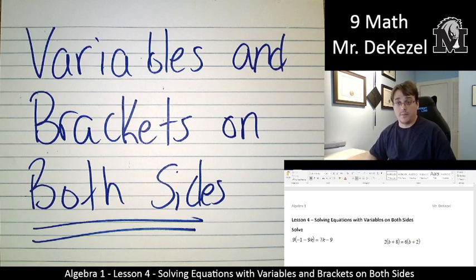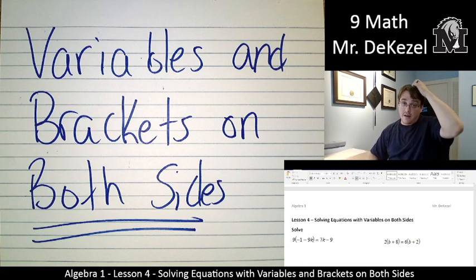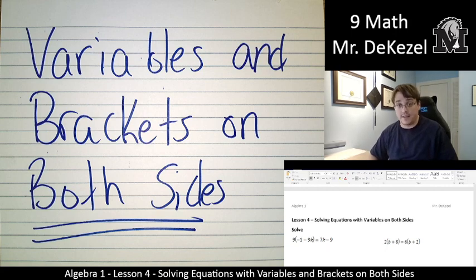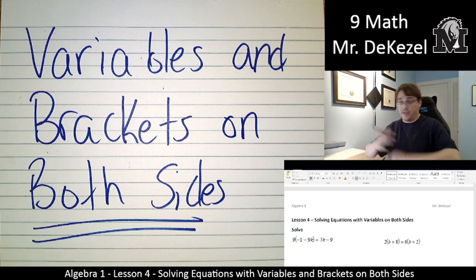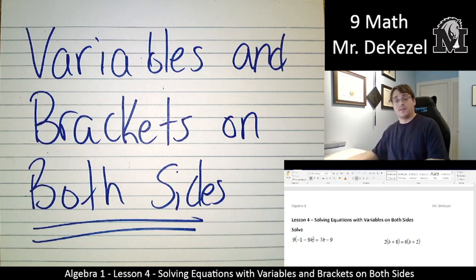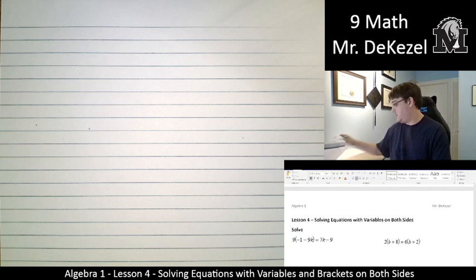Hello, grade 9 math class. Welcome back to another lecture. Today we have variables and brackets on both sides. We're going to solve these equations, isolate for the variable, and move things around the equal sign. It's going to get awesome. Let's go.